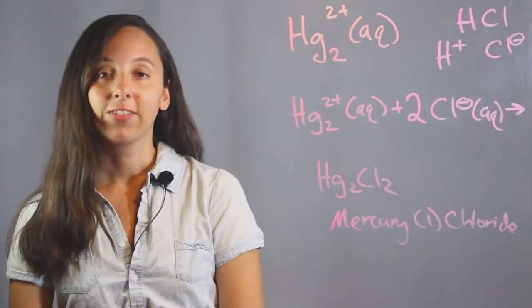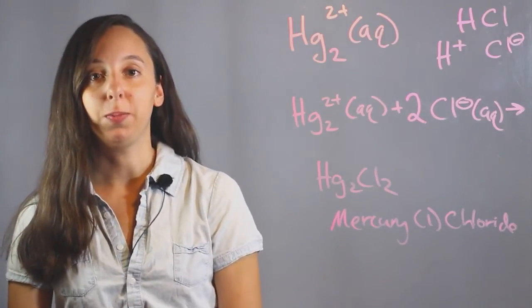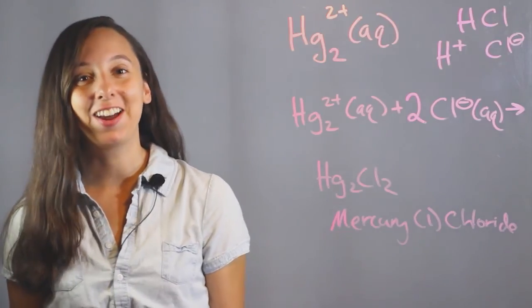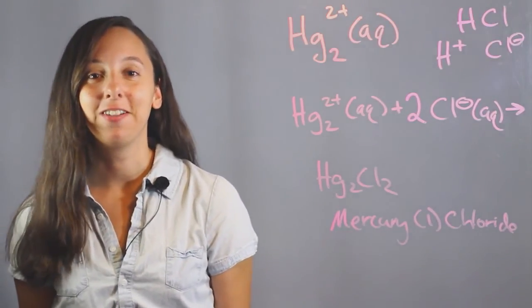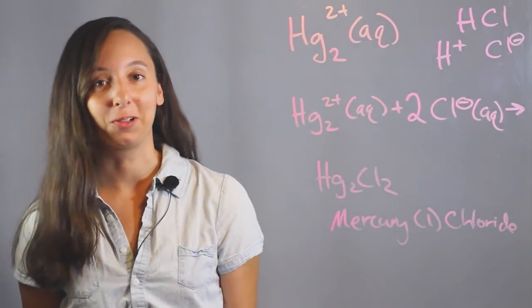And we're done. I'm Robin Higgins, and this has been the net ionic equation for the reaction of aqueous mercury and hydrochloric acid.